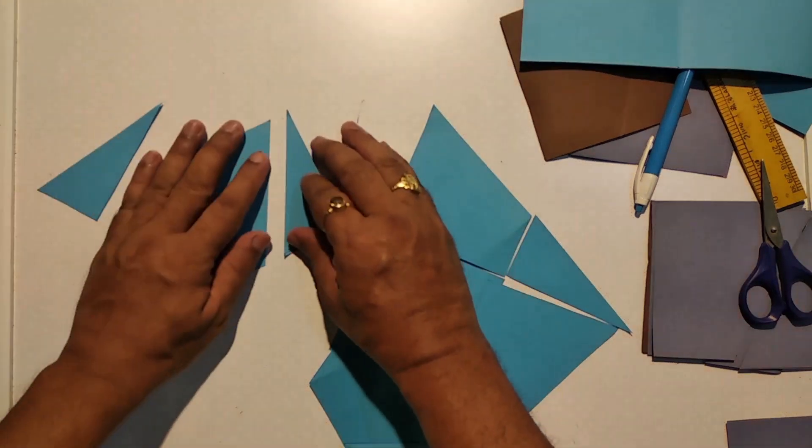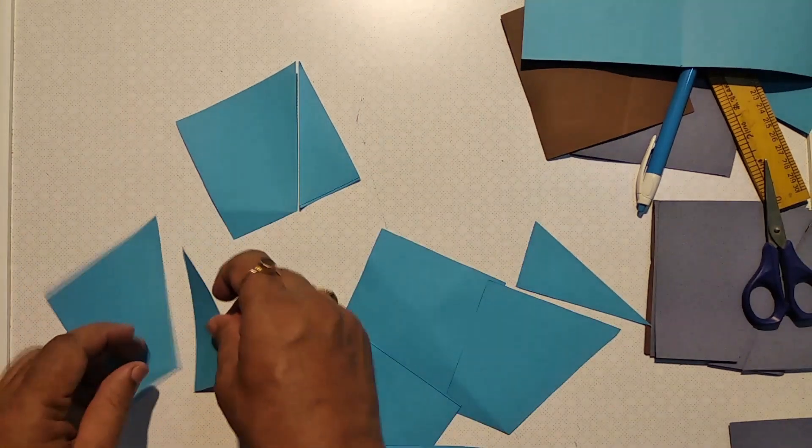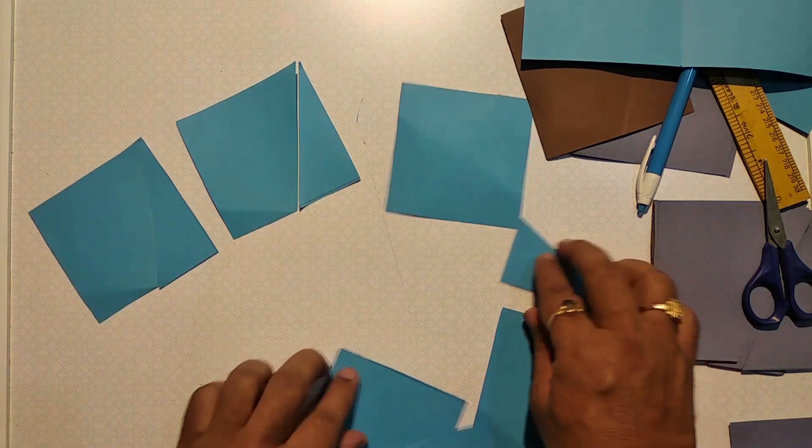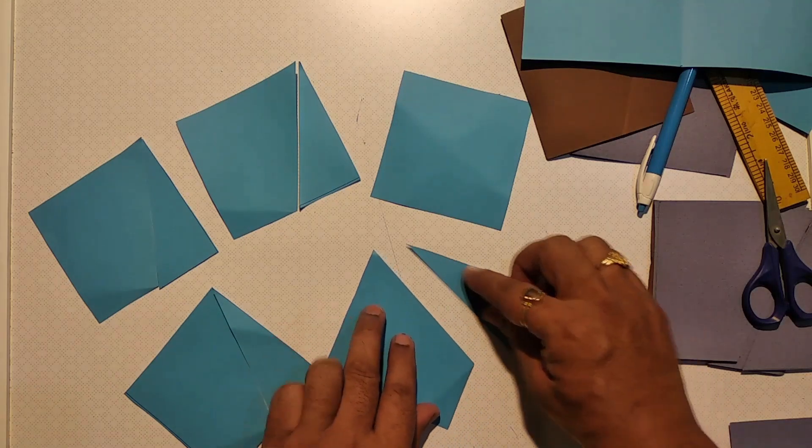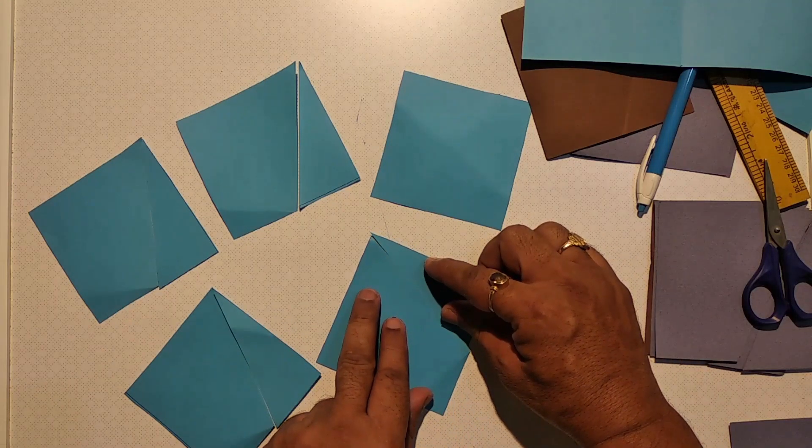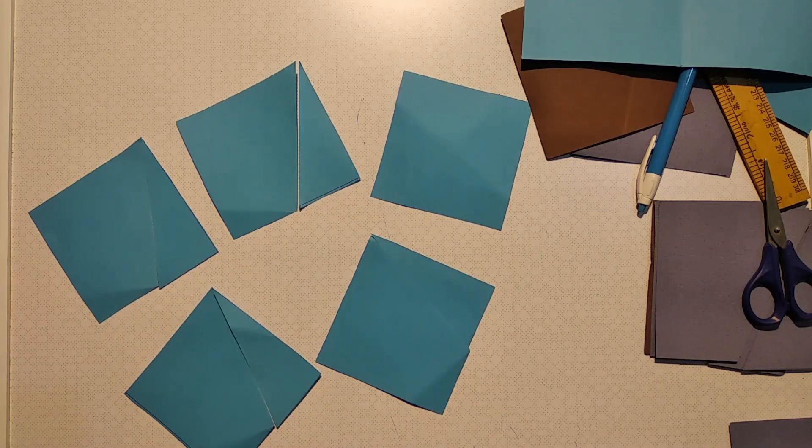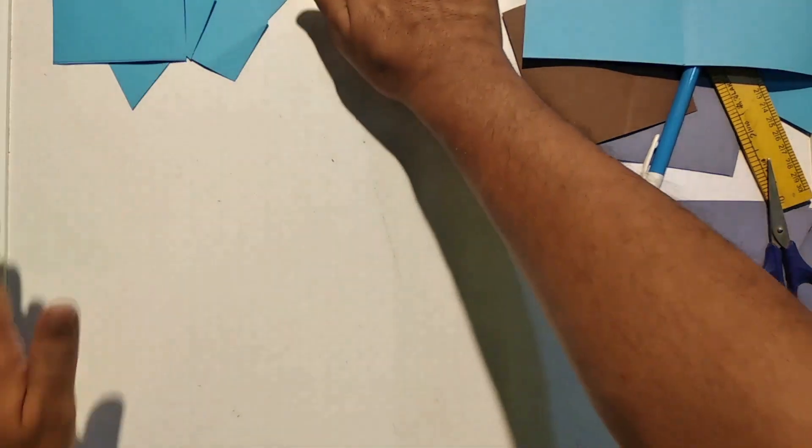Actually we have formed five squares. This is what we have cut. And we have cut the larger square actually into five equal squares.